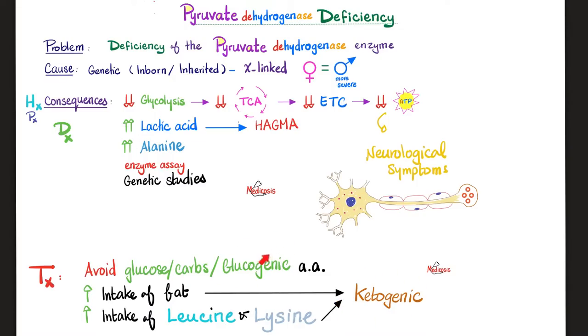What does glucogenic mean? Gluco means glucose, genic means genesis. Do not take anything that gives you glucose. Instead, take in things that give you ketone bodies.